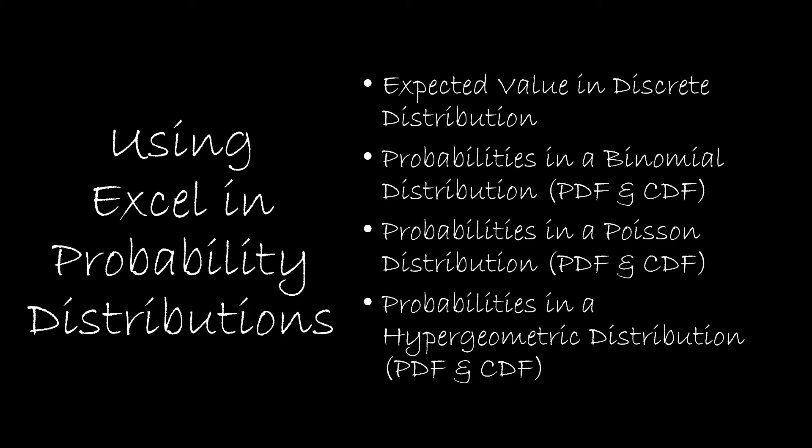In this video we're going to take a look at using Excel with probability distributions. We'll look at expected value in a discrete distribution, then the binomial, Poisson, and hypergeometric distributions. We'll look at PDF and CDF for each — the probability of just one value or a cumulative probability. PDF means probability distribution function; CDF means cumulative distribution function. It'll make much more sense once you go through these examples.